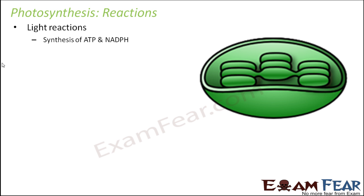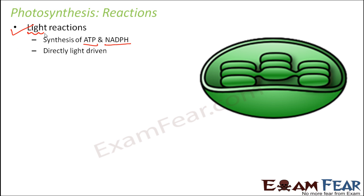In the light reaction, ATP synthesis and NADPH synthesis will take place. ATP is adenosine triphosphate, which is the energy currency of a cell. And NADPH is a molecule which is rich in energy. In fact, one NADPH can produce three ATP molecules, so you can understand how much energy they store. In the light reaction we will produce these high energy molecules. This reaction is called light reaction because it is directly dependent on light — this reaction can take place only in presence of light.